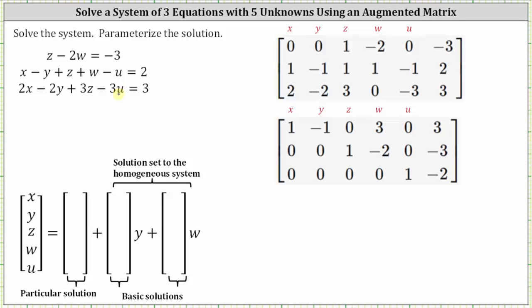I highly recommend labeling the columns of the augmented matrix to keep things organized. For example, notice the first equation is z minus two w equals negative three, and therefore the coefficients of x and y are zero. The coefficient of z is one, the coefficient of w is negative two, there is no u term so the coefficient of u is zero, and the constant is negative three.